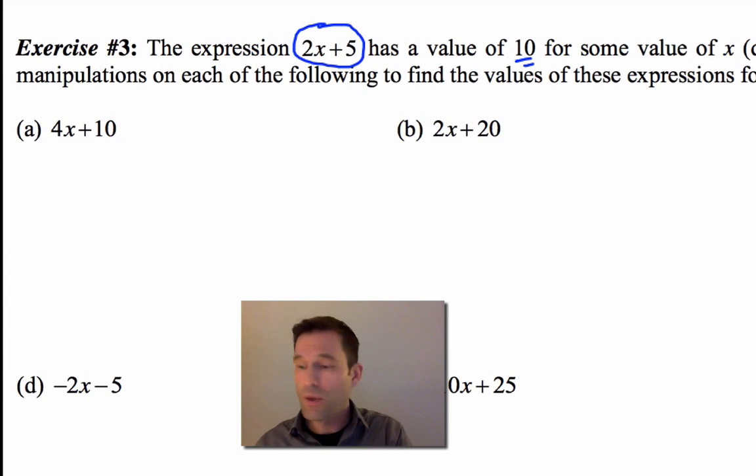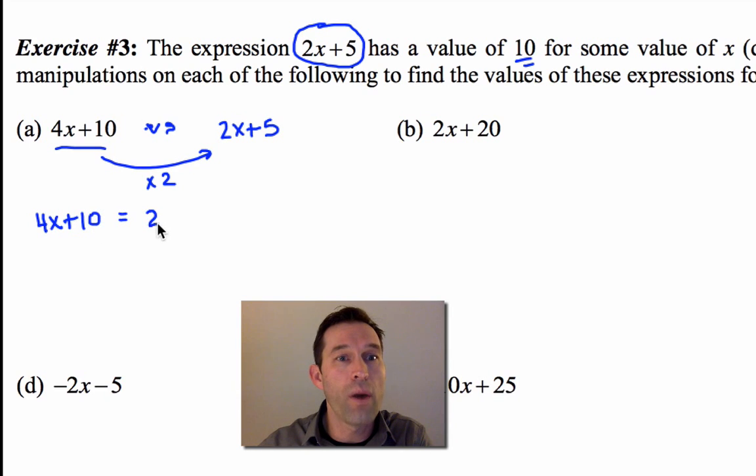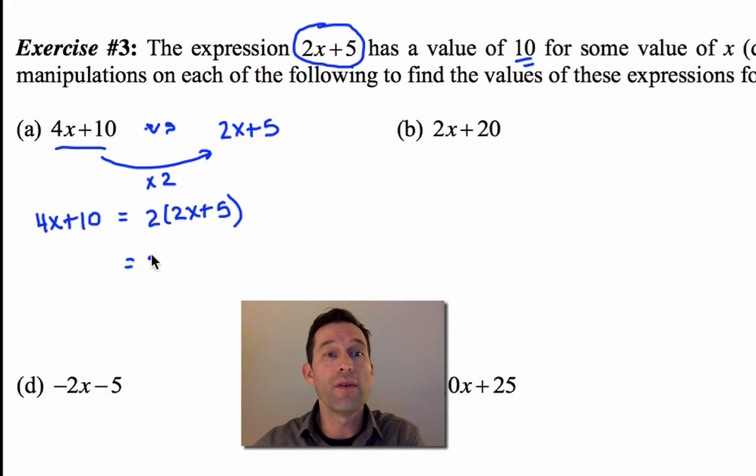Alright, let's take a look. So again, what we always want to be doing in these mindful manipulation problems is we want to be looking at the expression that we're trying to figure out the value of versus the expression that we're starting with. Hopefully this one was pretty easy because it was similar to the one that we did last time, right? I can say that 4x+10 is simply twice 2x+5. Again, all that is is the distributive property, right? And since I know that 2x+5 has a value of 10, 4x+10 must have a value of 20. Got it?